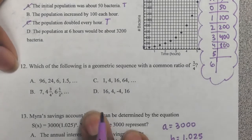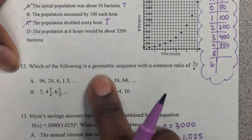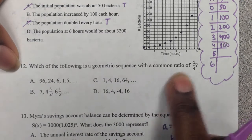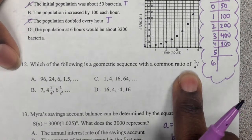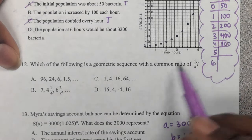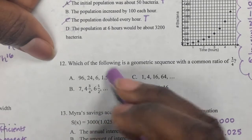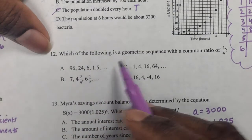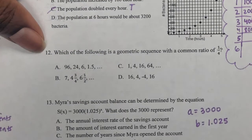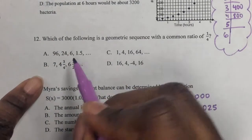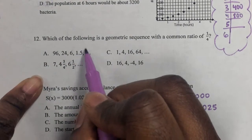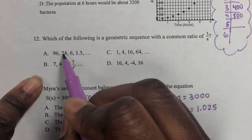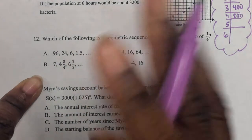All right, let's continue. Let's look at number 12. So for number 12, it says, which of the following is a geometric sequence with a common ratio of 1 over 4? Remember how to find the common ratio? We do that backwards thing. Dividing, but not dividing forwards, dividing backwards. So we're looking at each of these. 1.5 divided by 6. Or 6 divided by 24. 24 divided by 96. You have to try all of them.